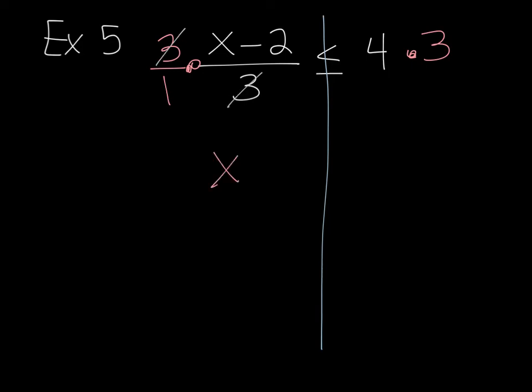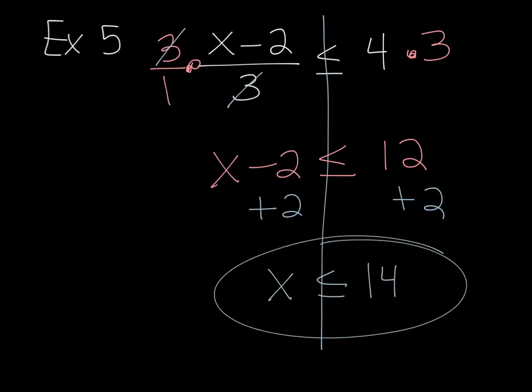So, then I have X minus 2 is less than or equal to 12. Again, I did not multiply or divide by a negative, so I don't have to flip the inequality sign. Then we're back to good old school. Just simply add 2 to both sides, and I'm left with X is less than or equal to 14. That's my final answer.